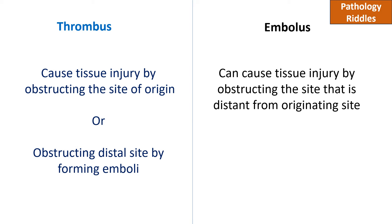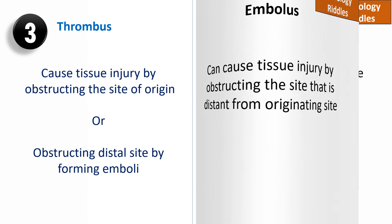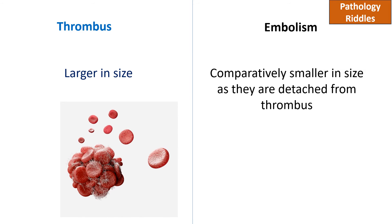A thrombus causes tissue injury by obstructing the site of origin or by obstructing distal to the site where it is formed, while an embolus can cause tissue injury by obstructing a site that is distant from the originating site.